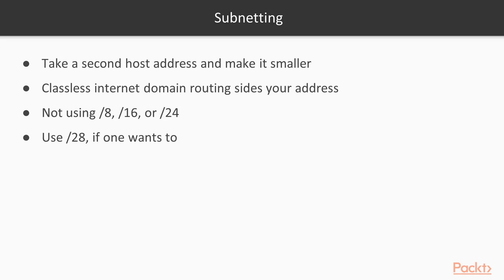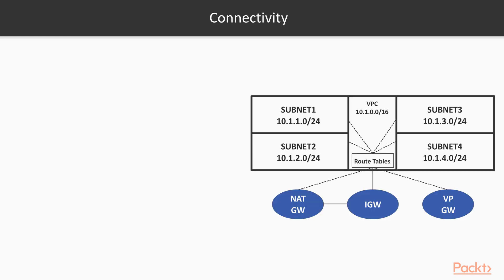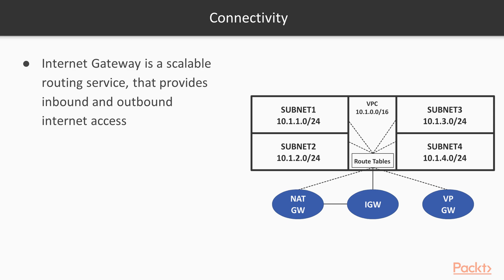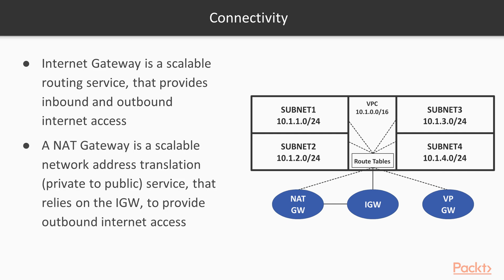Connectivity is all done through route tables. If you want to deploy a website, you can deploy it into a subnet and add an internet gateway to your route table, which allows inbound and outbound access to the internet. If you only want outbound access — for example, downloading patches or file sharing — but don't want anybody accessing your systems from outside, you can use a NAT gateway. A NAT gateway connects to an internet gateway, connects to a public subnet, but only allows outbound access, so you can't access servers behind a NAT gateway from the internet itself.